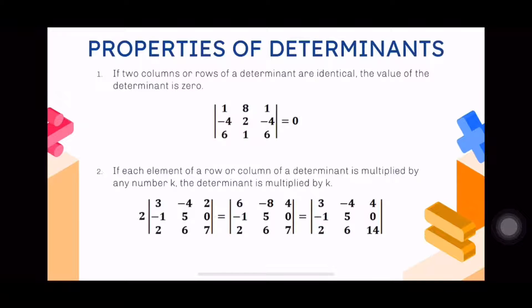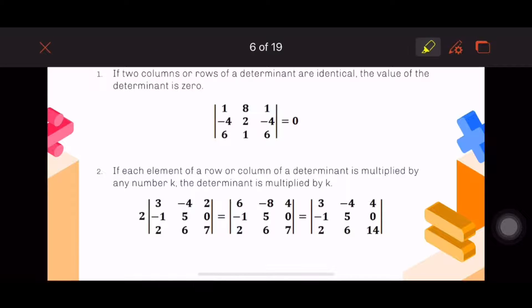The first property is: if two columns or rows of a determinant are identical, the value of the determinant is zero. If you're a keen observer and you notice that you have two rows or two columns whose elements or entries are identical, then it's automatically zero. You don't need to solve anymore.